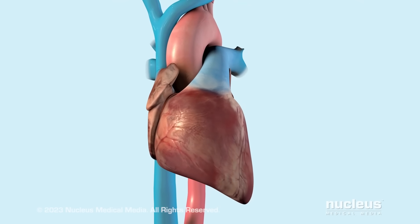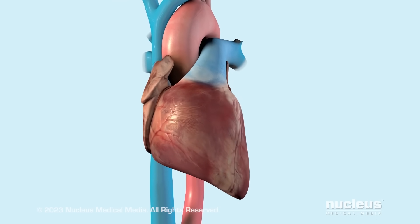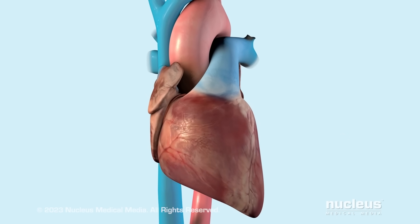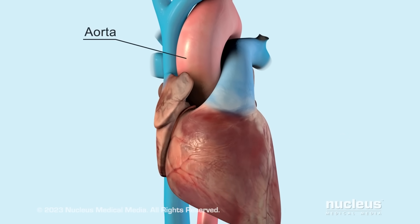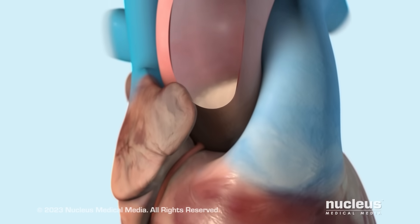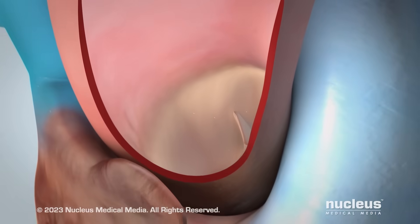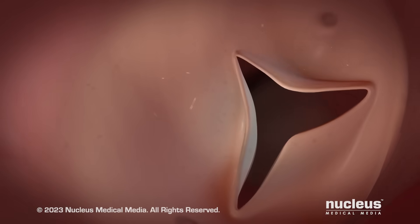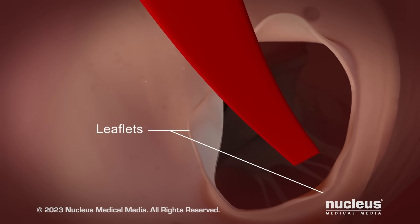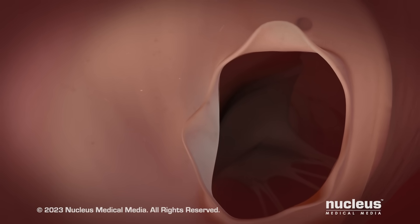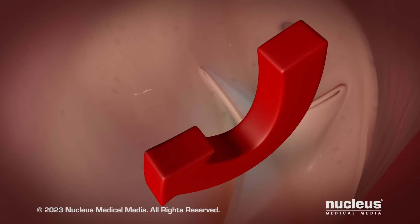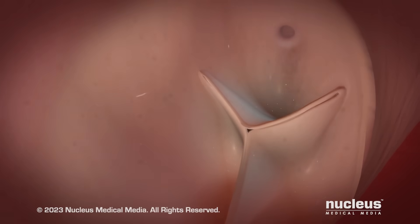Your aortic valve is one of the four valves in your heart. It lies between your left ventricle, or lower left chamber, and the large blood vessel supplying oxygen-rich blood to your body, called the aorta. When your left ventricle contracts during each heartbeat, it pushes blood through three flexible cup-like leaflets that make up your aortic valve. When your left ventricle relaxes, your aortic valve closes to prevent blood from flowing back into your left ventricle.